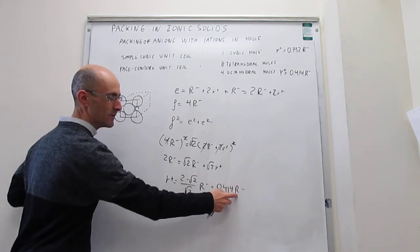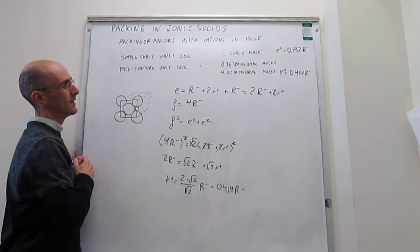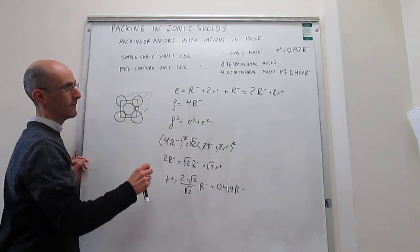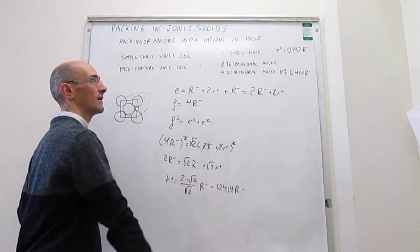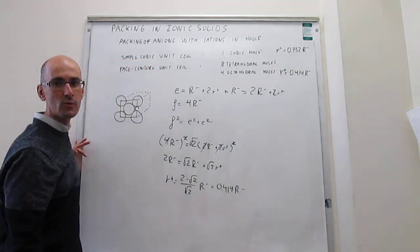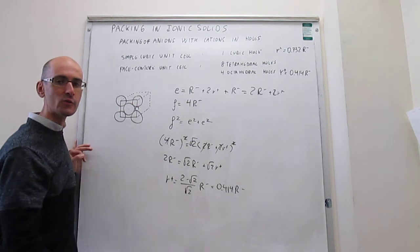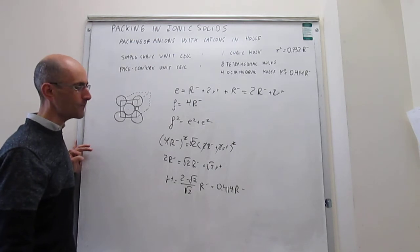Now, there is actually an upper limit to this type of packing: face-centered unit cell with occupation of octahedral holes. And that is that if the radius of the cation becomes much larger than this number and it actually reaches this number, then you will change the packing to generate a simple cubic packing of the anions, in which the cation would be into the cubic hole left behind.